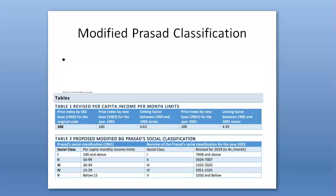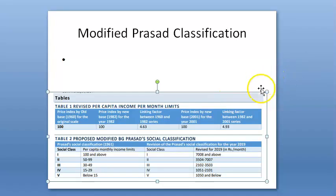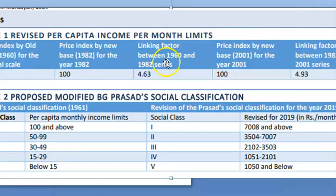Let us look at modified Prasad's classification. Basically Dr. BG Prasad gave the social stratification based on family income — specifically per capita family monthly income. There are five classes defined. We have picked up the latest available, which is the 2019 one.